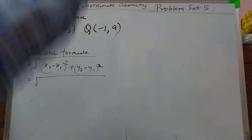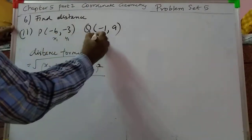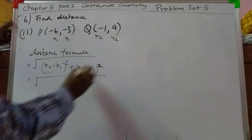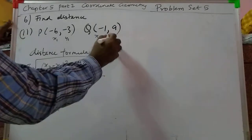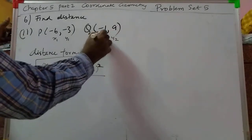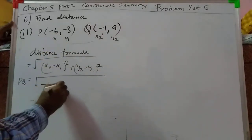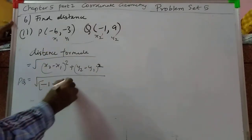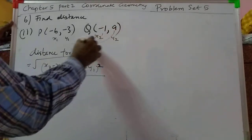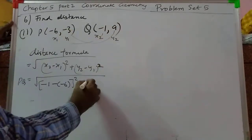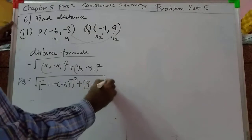For the second sub-problem, we apply the distance formula again. Take the points as (x1, y1) and (x2, y2). Subtracting: it becomes minus 1 minus of minus 6, the whole square, plus 9 minus 12, that is minus 3, the whole square.